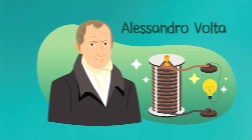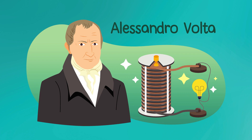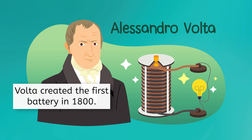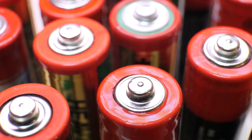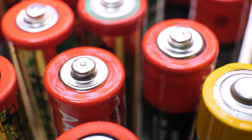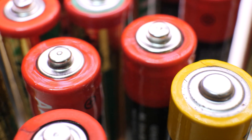The unit volts was named after the Italian scientist Alessandro Volta, who created the first battery in the year 1800. His simple battery consisted of stacked zinc and copper discs, but was capable of producing a steady electric current, and became the prototype for the modern batteries you use today.